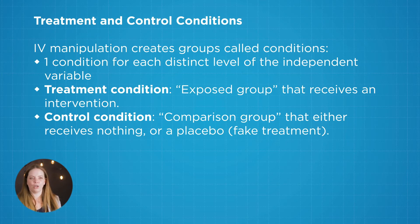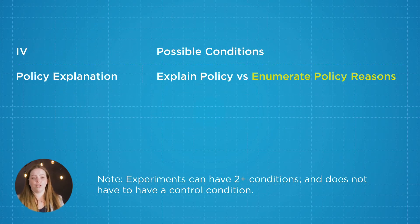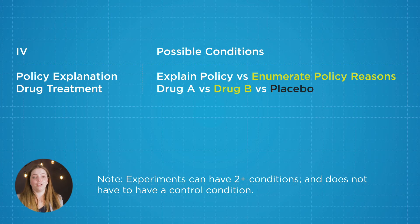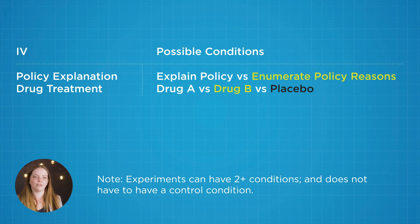We still had them drink a soda so that we control for the possibility that it's the sugar in the soda and not the caffeine causing the effect. Other examples of treatment and control conditions include whether you're on depression medication or receiving a placebo, or whether you've taken a class that uses cooperative learning groups versus classes that don't — so you can compare those two teaching styles.